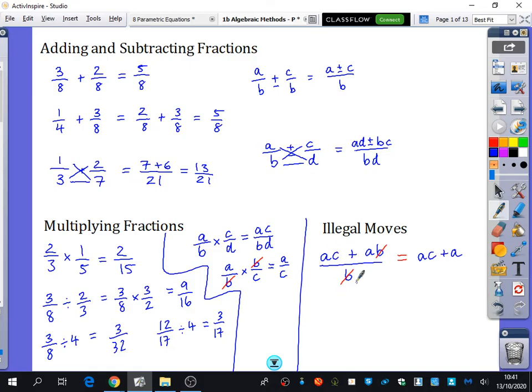Because the AC is also being divided by B. So you can only do this cancelling when everything is being multiplied. So in this case, this is illegal. This does not equal this because there is no B here for me to cancel it with. And you could just try that out with some numbers. Like if I said 3 times 2 plus 3 times 4 divided by 4. Well, this is clearly equal to 3 times 2 is 6, 3 times 4 is 12. So that's 18 over 4 or 9 over 2.